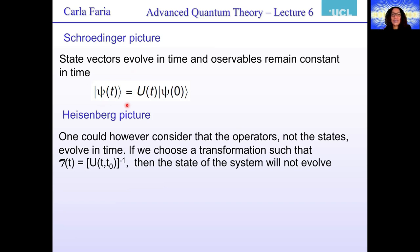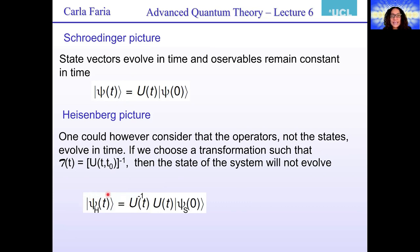Why can we not consider that the operators, and not the states, evolve in time? We could — and this is what we know as the Heisenberg picture. What we could do is choose a transformation such that this transformation would undo everything that the time evolution operator does — it would be the inverse of the time evolution operator — meaning that the state of the system would not evolve. This would be psi Heisenberg, applying this transformation to psi(t) in the Schrödinger picture, which is U(t) psi_Schrödinger(0).